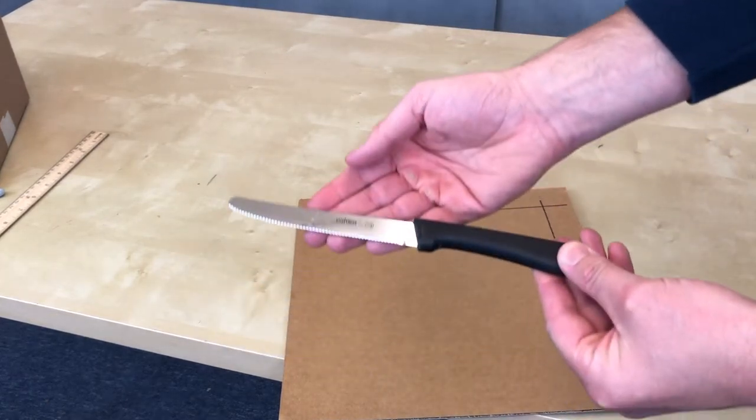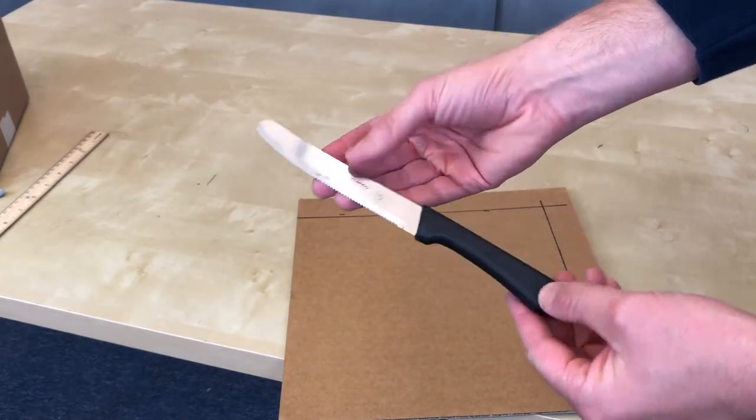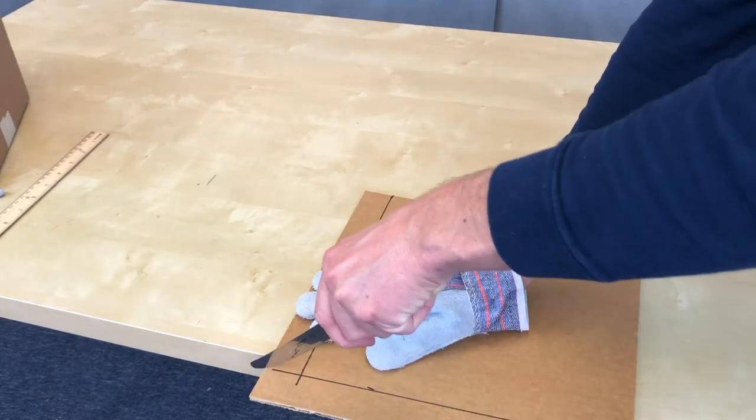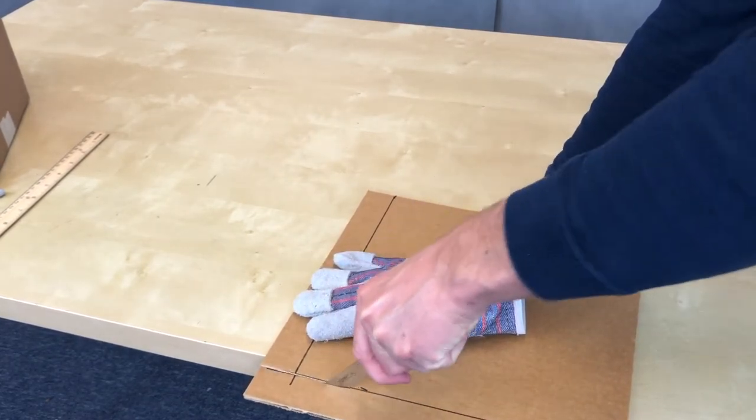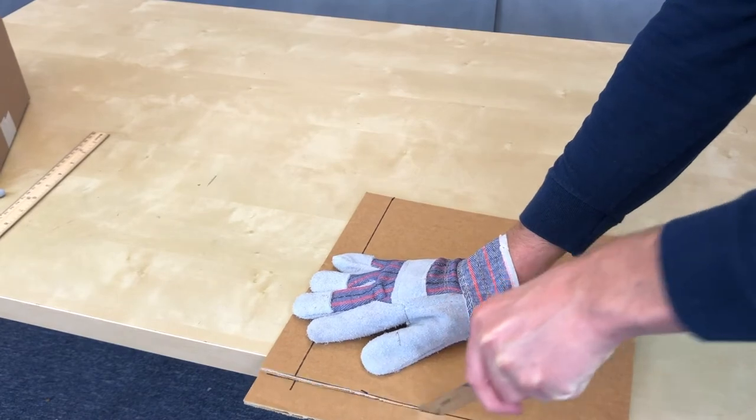If you'd like to cut, ask the adult. A steak knife works great for cutting cardboard. Make sure to put a glove on your non-cutting hand and move your work to the edge of the table. The table supports the work as you saw.